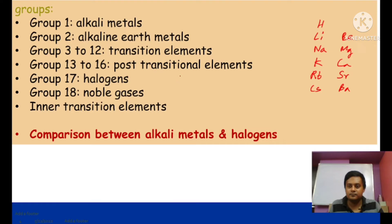Group 17 — halogens, derived from 'halos' meaning sea salt, as most halogens are derived from sea salt: fluorine, chlorine, bromine, iodine. Group 18 — noble gases (inert gases): helium, neon, argon, krypton, xenon. Inner transition elements are the lanthanides and actinides.